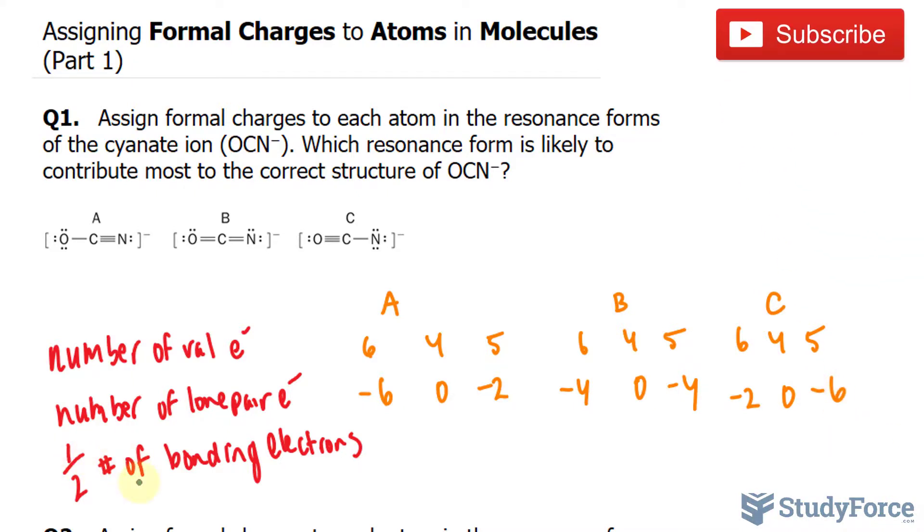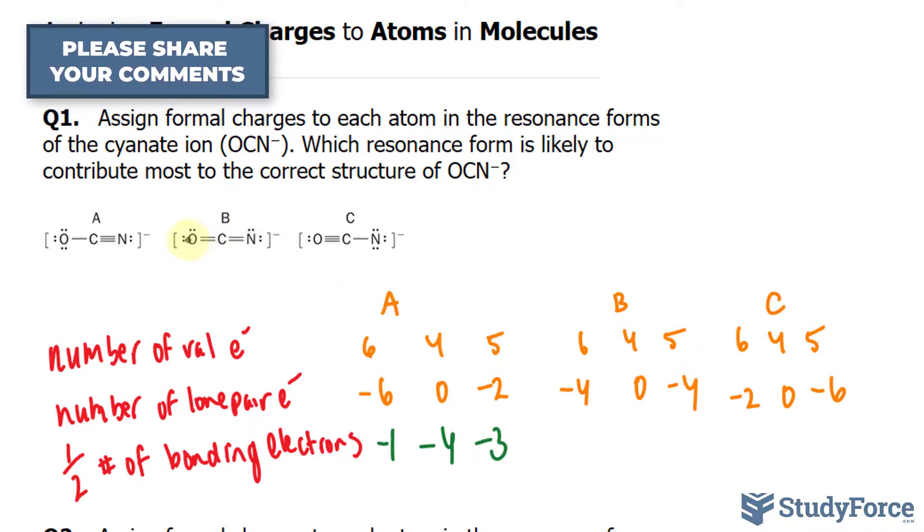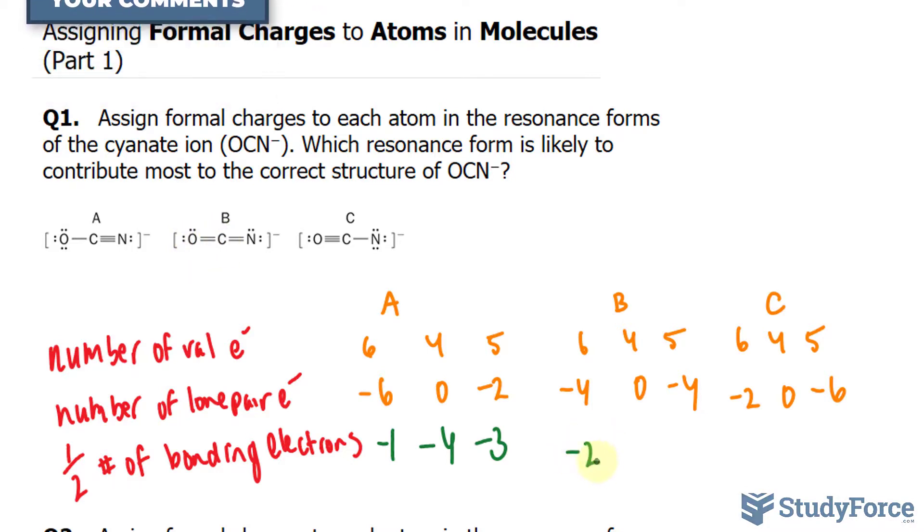Lastly, we'll analyze half the number of bonding electrons. So over here, we have 1 bond between oxygen and carbon. Carbon has 1, 2, 3, 4. Nitrogen has 3. And we'll represent these as negative half of the bonding electrons. For this structure, we have 2 with oxygen and carbon. So negative 2, negative 4, and negative 2. The negative 4 comes from 1, 2, 3, 4. Oxygen and carbon here share 3. So negative 3, once again negative 4, and negative 1.